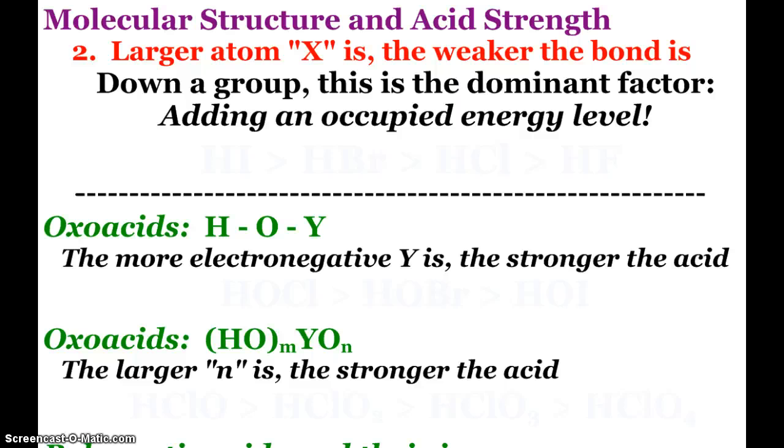Another factor is that the larger the atom the hydrogen is attached to, the weaker the bond is. So as you go down a group, this is our dominant factor. And again, we talked about adding an occupied energy level so those atoms are bigger. So again, a classic look at our halogens. Hydroiodic acid is stronger than hydrobromic, stronger than hydrochloric, stronger than hydrofluoric.